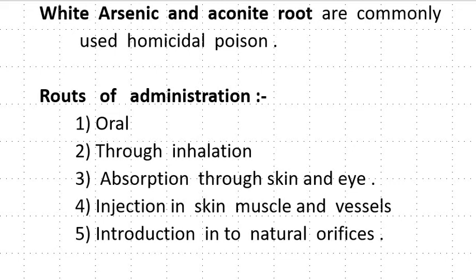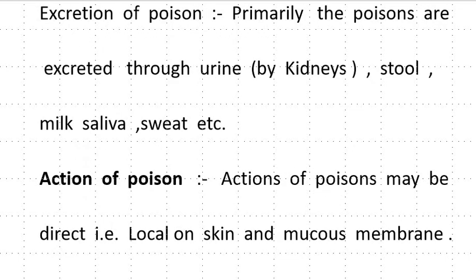White arsenic and Aconite fruits are commonly used as homicidal poisons. Routes of administration of poisons: oral route, through inhalation, absorption through skin and eye, injection into skin, muscle and vessels, and introduction into natural orifices. Excretion of poison — primarily the poisons are excreted through urine, teeth, milk, saliva and sweat.